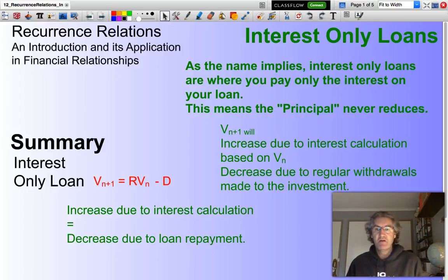In particular, we will be looking at the recurrence relation. What you need to be aware of is this key fact: our loan will increase due to an interest calculation, and it will also decrease due to a loan repayment. If the increase matches the decrease, then we have what's called an interest-only loan.